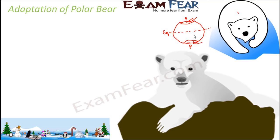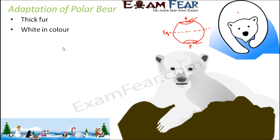Polar bears are called polar bears because they are found in the polar regions. They have thick fur, which provides warmth to the body — just like the fur jackets we wear in winter. Their fur is white in color. Since these regions are completely covered with snow, the white color helps them blend into the background, protecting them from predators.